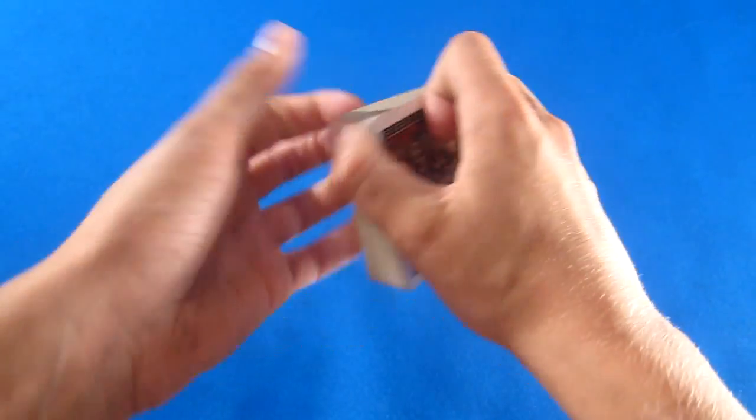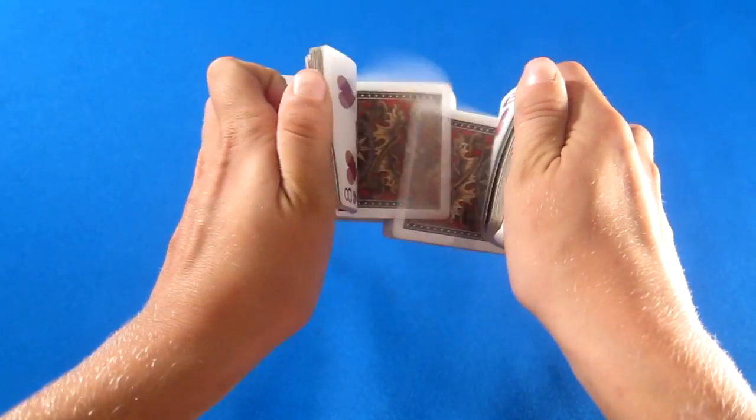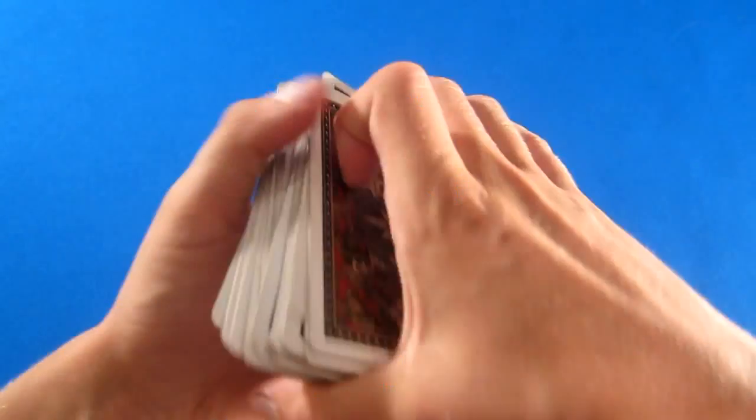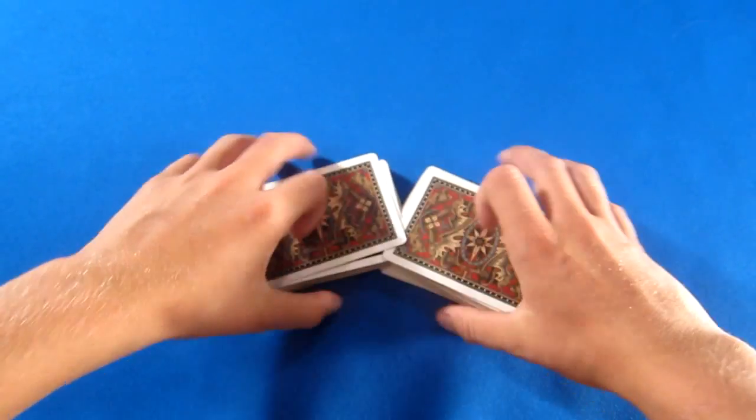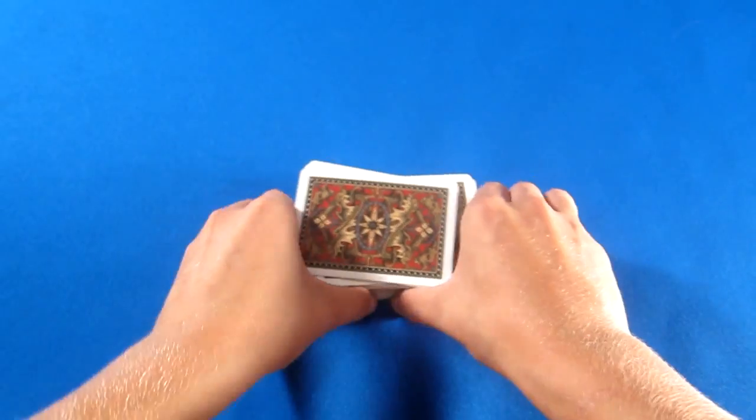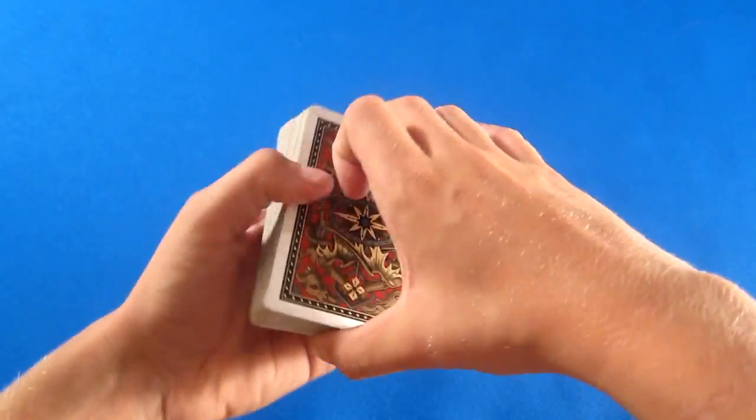Okay, we're down at the blue mat. Now, like I said, we're going to be teaching you the original version which is a four packet cut, full deck false cut.